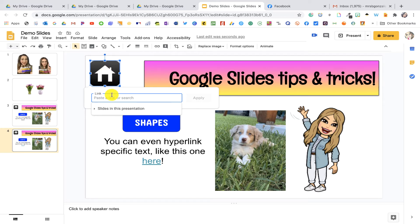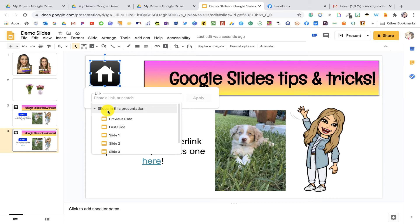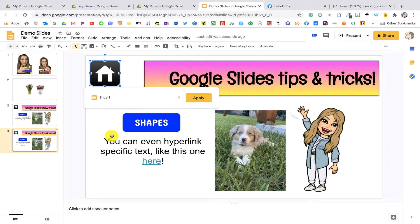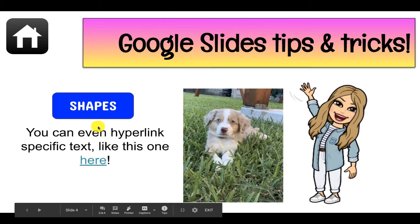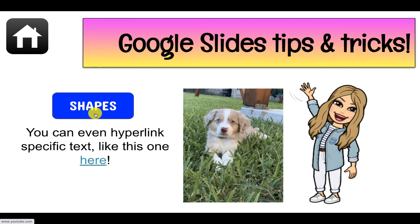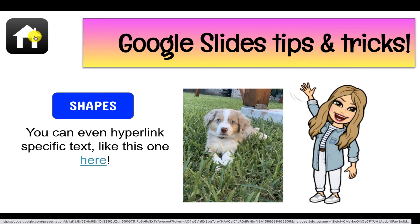Instead of typing a website, hover over the option and you'll see a gray bar — that's 'Slides in this presentation.' Select that and choose slide number one, then click Apply. Let's check it out — I'll click Present. Now if I hover over the home button, notice how my cursor changes to a little hand symbol, which shows that element is hyperlinked. Over on the text, it changes back to the regular arrow cursor. If I hover over my puppy dog image, she's hyperlinked too. Now let's test the home button — and there you go, it takes us to the first slide.